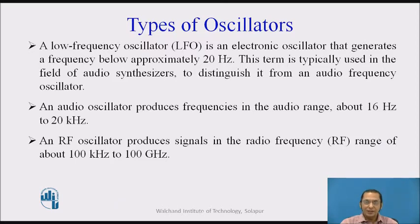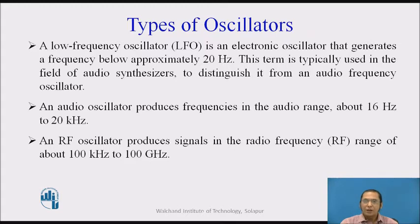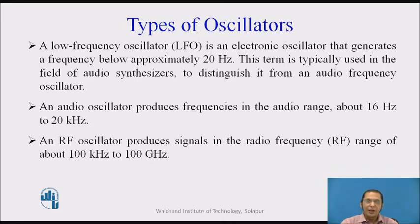A low-frequency oscillator generates frequencies below approximately 20 Hz and is typically used in the field of audio synthesizers. An audio-frequency oscillator produces waveforms in the audio range, from 16 Hz up to 20 kHz. Lastly, there are oscillators generating high-frequency or radio frequencies — a typical application being carrier waveforms in modulation — in the range of 100 kHz to 100 GHz.